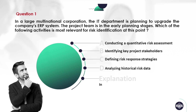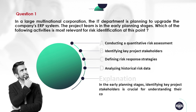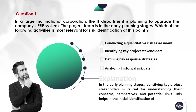In the early planning stages, identifying key project stakeholders is crucial for understanding their concerns, perspectives, and potential risks. This helps in the initial identification of risks. Hence, the correct answer is Option B: identifying key project stakeholders.